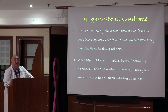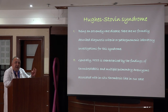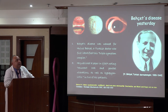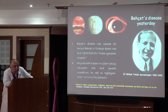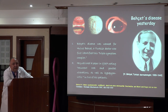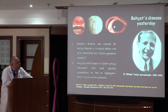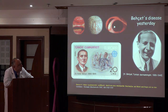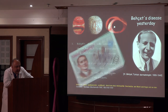Hughes-Stovin syndrome is characterized by thrombophlebitis and multiple pulmonary aneurysms with in-situ thrombosis — not thromboembolic — due to inflammation of the underlying pulmonary arterial wall. I cannot discuss Hughes-Stovin without mentioning Behçet's disease, the complete form of this syndrome, first described by Turkish dermatologist Dr. Hulusi Behçet, who described the classic triad of recurrent oral ulcers, genital ulceration, and iridocyclitis — the triad included in the diagnostic criteria of the syndrome.